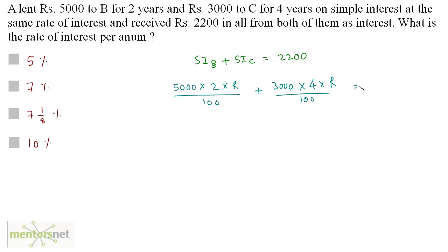So R upon 100 is equal to 2200. These zeros get cancelled out. What remains is 50 times 2R that's 100R plus 30 times 4R that's 120R and that's 2200. So 220R is equal to 2200. Therefore R is equal to 2200 by 220 and that's 10. So the rate of interest per annum is 10%. Option D.